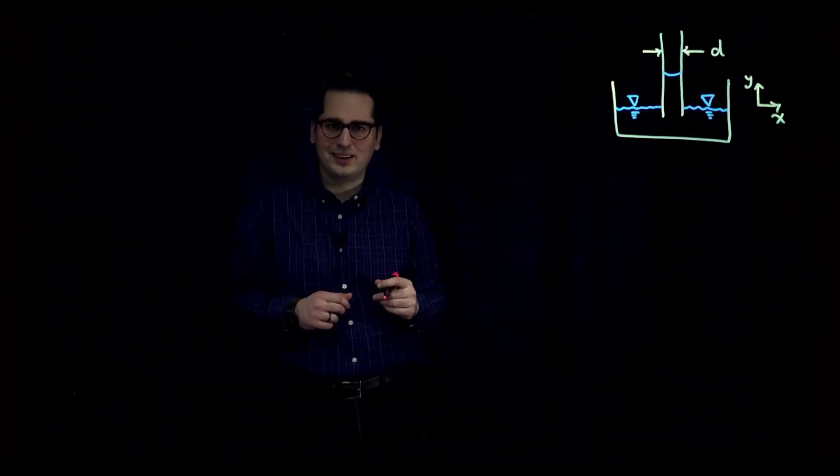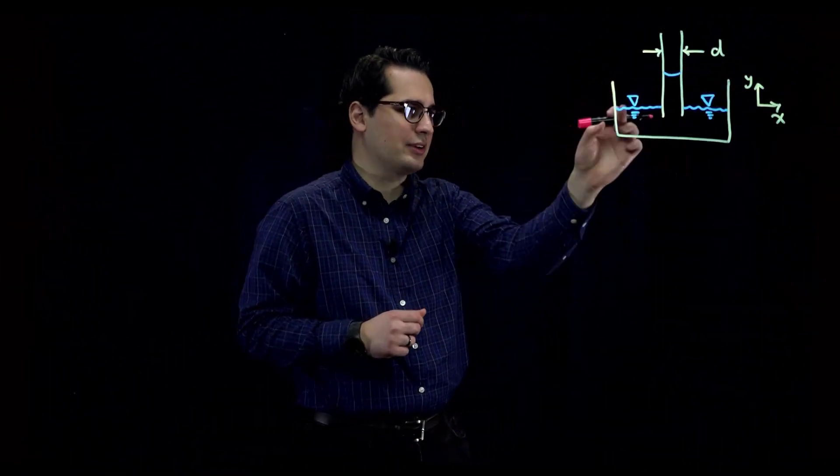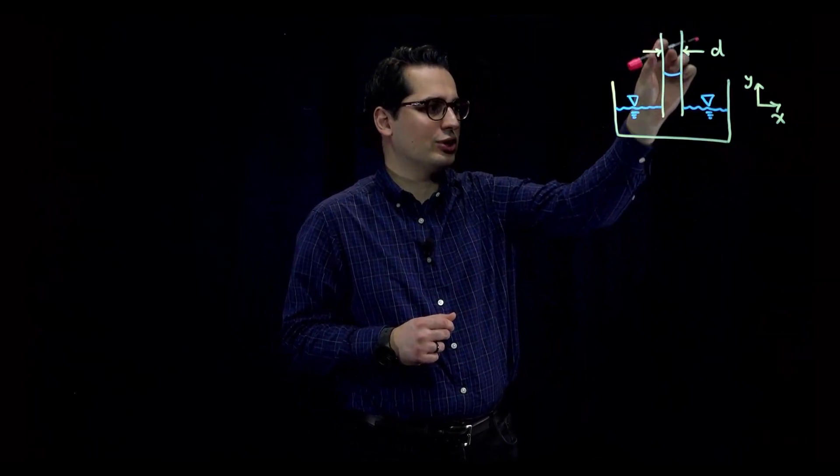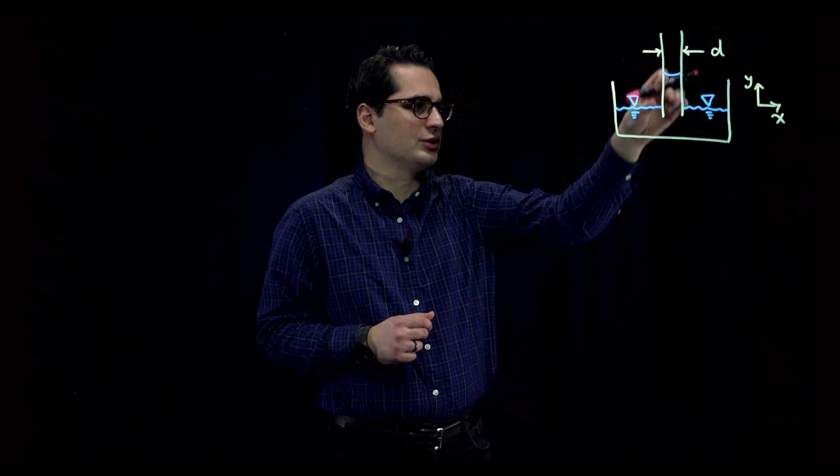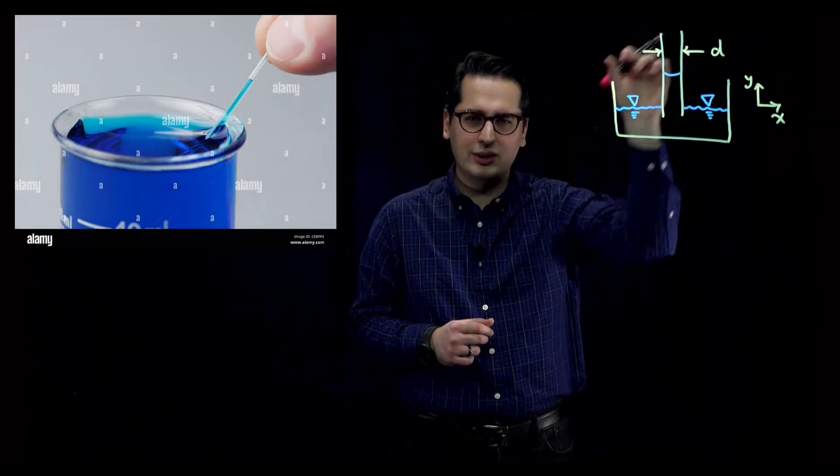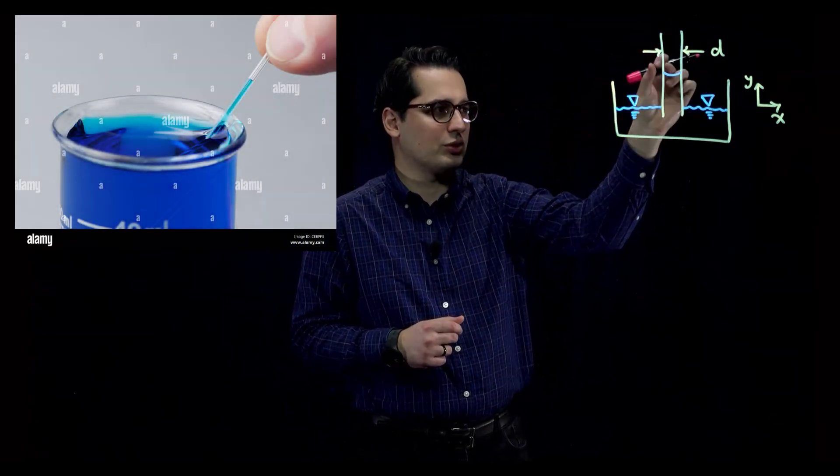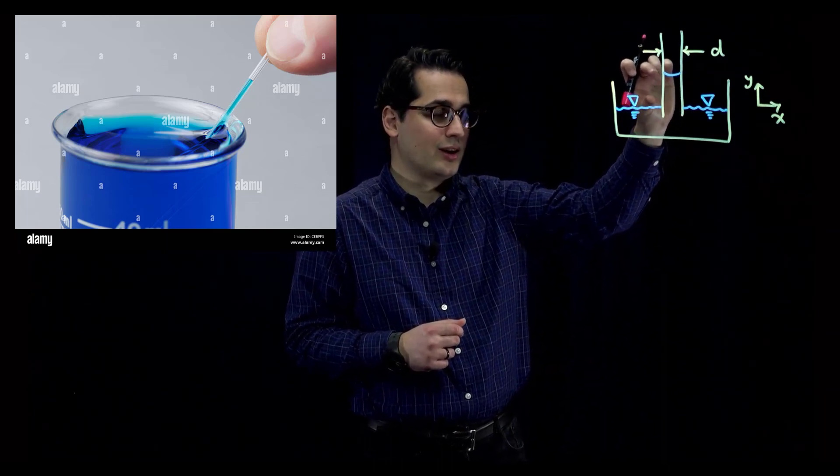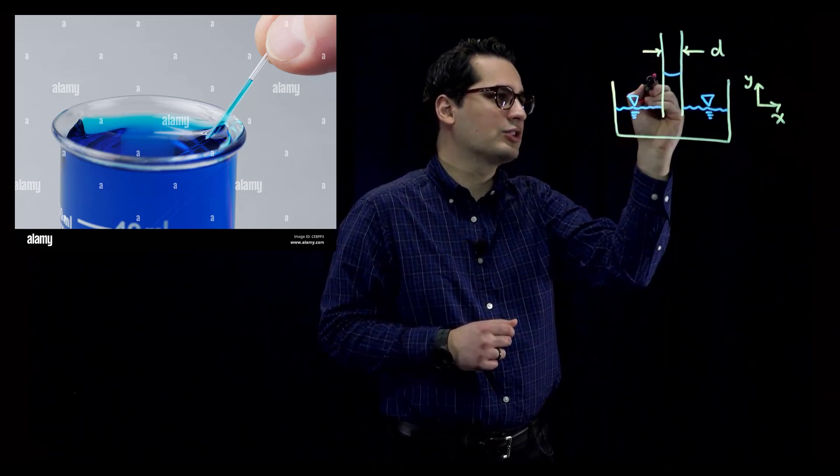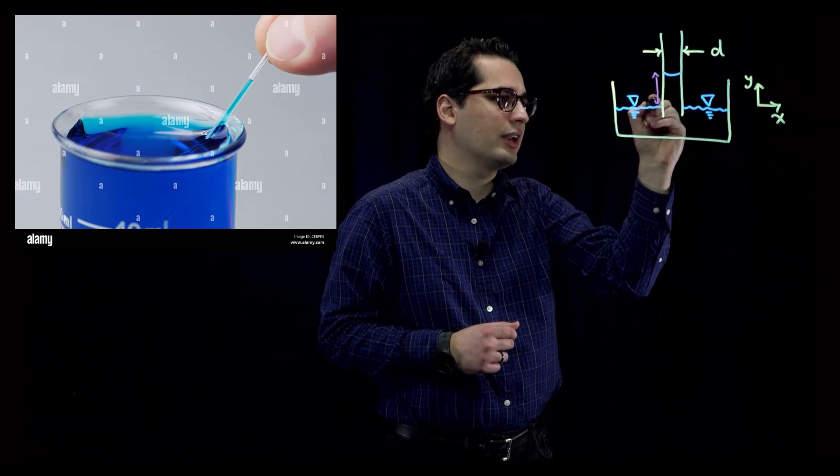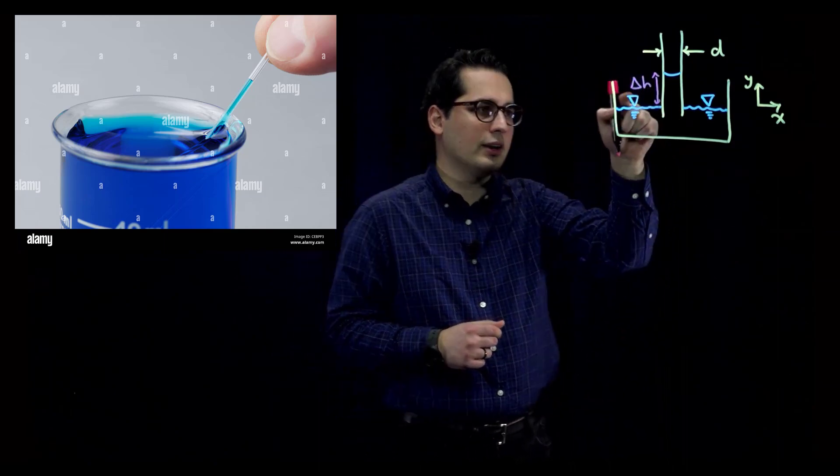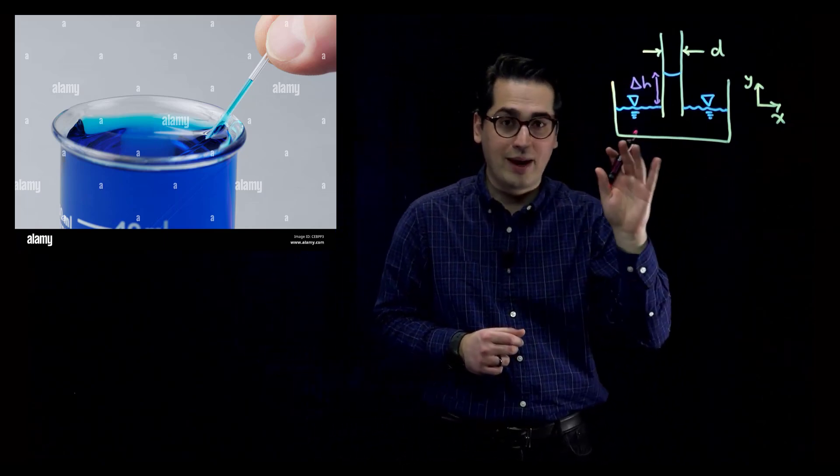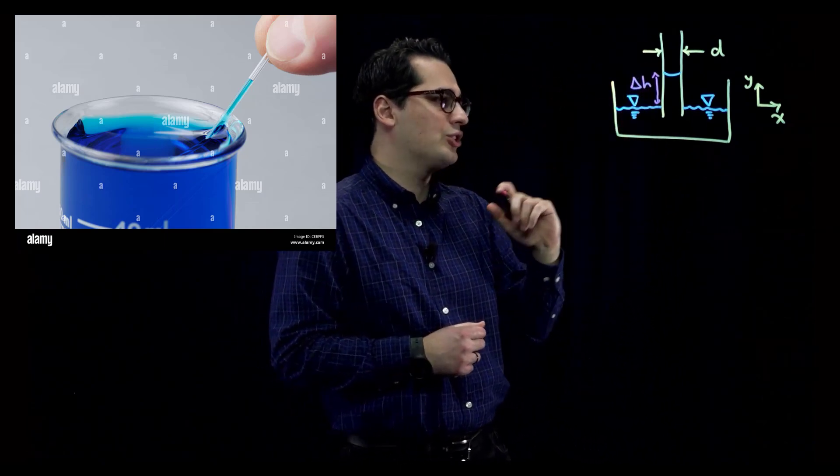All right, let's take a look at an example. I have a container and there is water in this container. Then I insert a circular straw with the diameter of D into the container. Because the straw is narrow, water within the straw is going to rise. And this is exaggerated, but the water within the straw is going to rise to this level, delta H. I'm going to find delta H mathematically. I want to see if I can write an equation to find delta H.